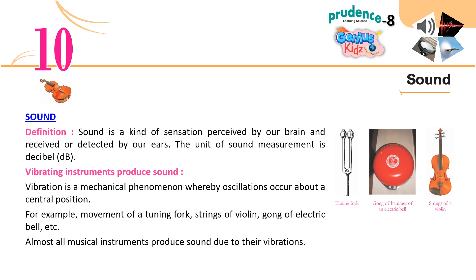Vibration is a mechanical phenomenon whereby oscillations occur about a central position. Examples include the movement of a tuning fork, strings of a violin, the gong of an electric bell, etc. Almost all musical instruments produce sound due to their vibrations.